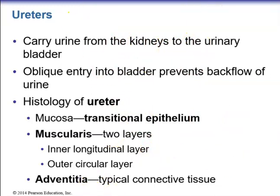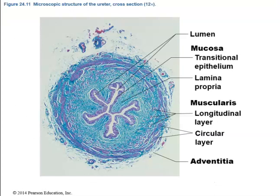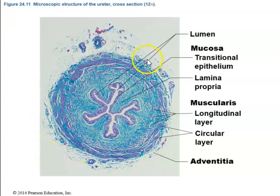Histologically, the ureters are lined by transitional epithelium. They contain a muscularis layer with two layers: an inner longitudinal layer and an outer circular layer. The outer adventitia is typical connective tissue. In a histological slide, the transitional epithelium appears dome-like in a relaxed state and flattens when the ureter is distended with urine.